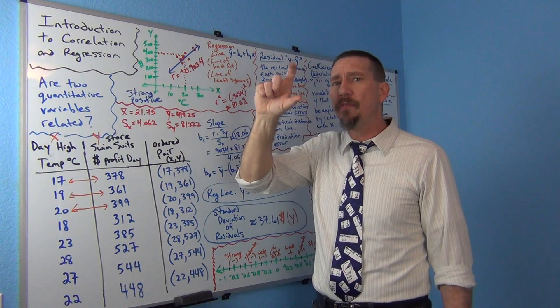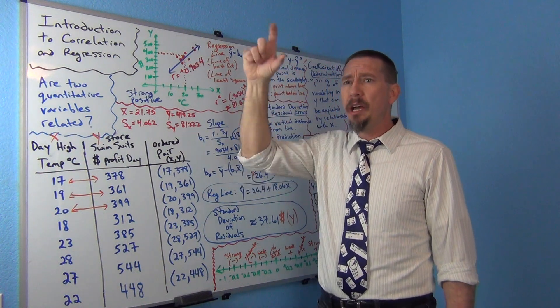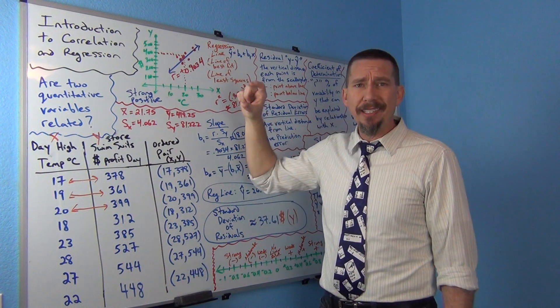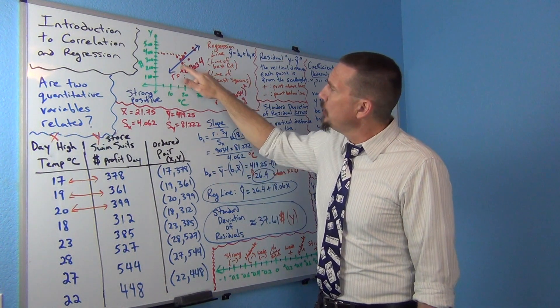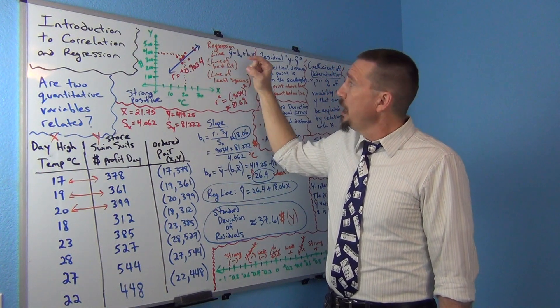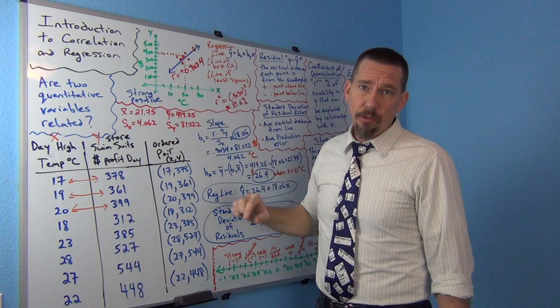In the scatter plot, figure out how far vertically is that point above or below the line. We call that a residual. If the point was below the line, it'll come out as a negative residual. At the points above the line, it comes out as a positive residual.